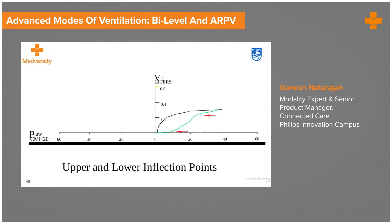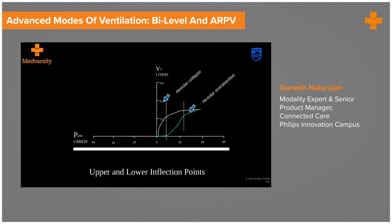Now, a couple of concepts on the upper and lower inflection points. The lower inflection point is the point at which the alveoli open to start generating volume — it is the pressure needed to overcome alveolar collapse. The upper inflection point is the point at which any additional increase in pressure does not generate any additional increase in volume, meaning alveolar overdistension has occurred. Any pressure above the upper inflection point results in a large volume jump without additional recruitment.